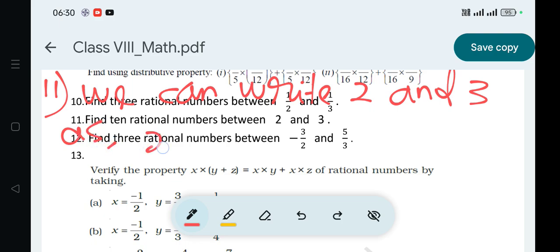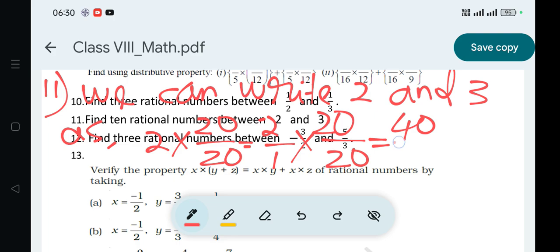2 multiplied by 20 by 20 is equal to 40 by 20. So 2 is equal to 40 divided by 20.